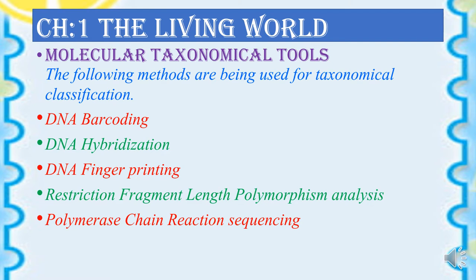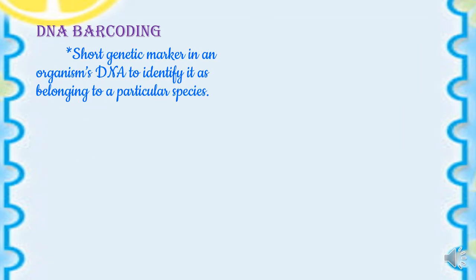The methods used as taxonomical tools include: DNA barcoding, DNA hybridization, DNA fingerprinting, restriction fragment length polymorphism analysis, polymerase chain reaction, and sequencing. These are used to identify the characteristic features of living organisms in order to classify them into different groups.